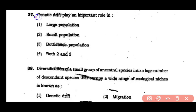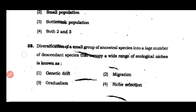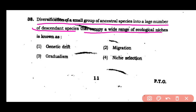Question number 37: Genetic drift plays an important role in large population, small population, bottleneck population, or both 2 and 3. The answer is option 4 — genetic drift plays an important role in both bottleneck populations and small populations. Question number 38: Diversification of a small group of ancestral species into a large number of descendant species that occupy a wide range of ecological niches is known as genetic drift, migration, gradualism, or niche selection.